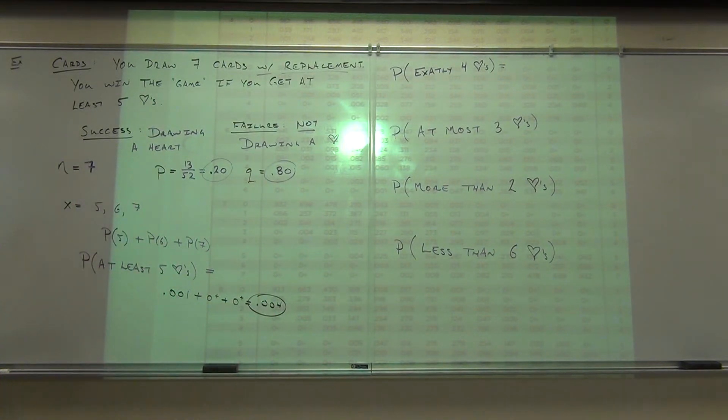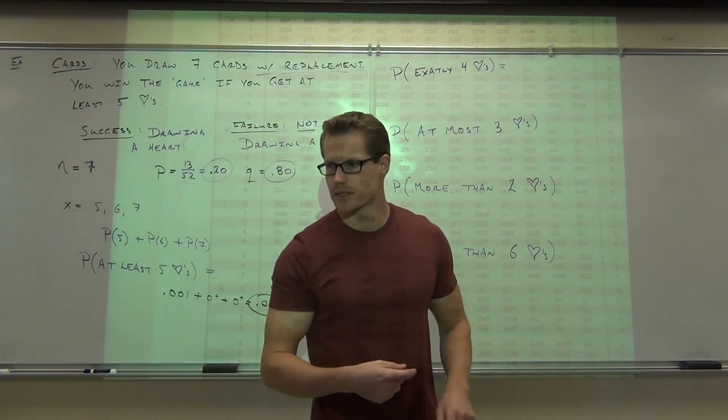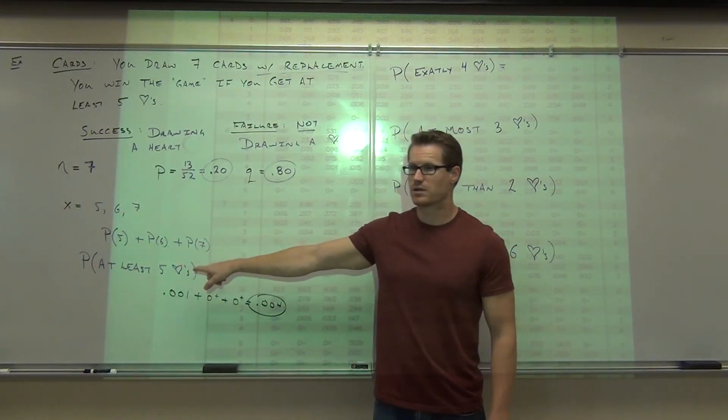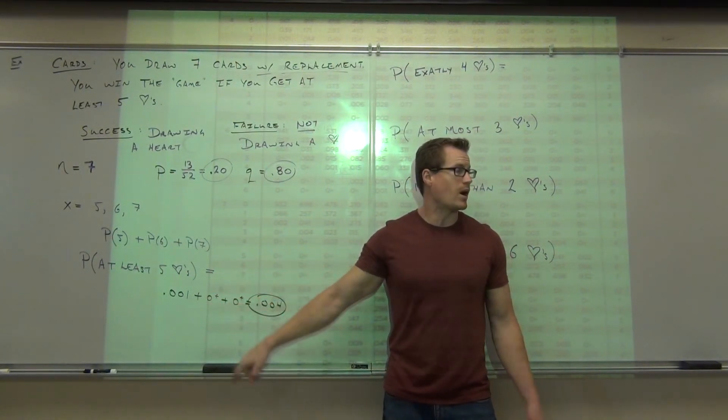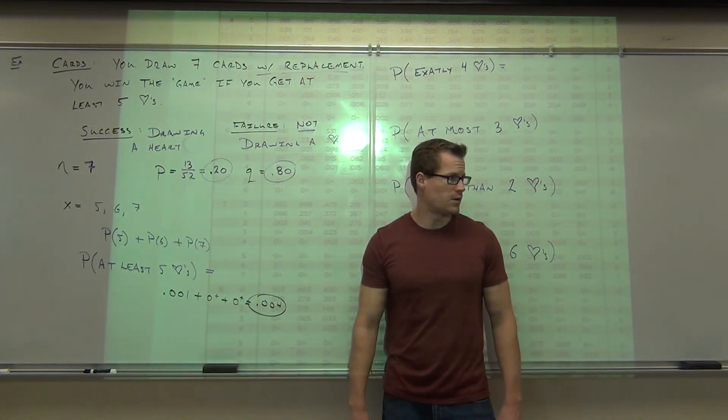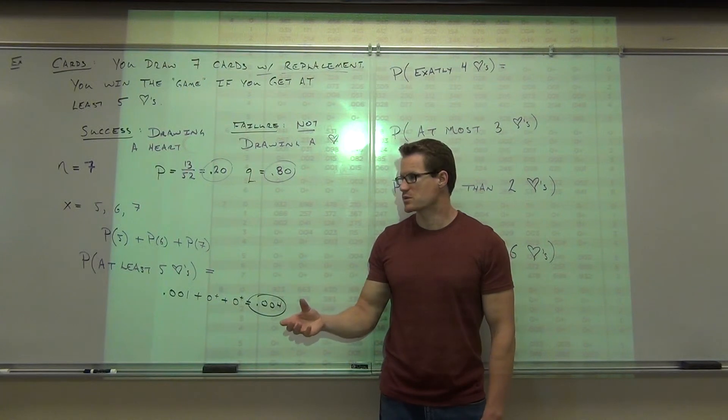So the probability that you're going to win my game, is it good or not? No. For this particular one, getting at least 5 hearts. Is that good? It's unusual. Why is it unusual? It doesn't follow .05. Yeah. It's not above .05. So it's less than or equal to .05. So that would be very unusual to win this game.